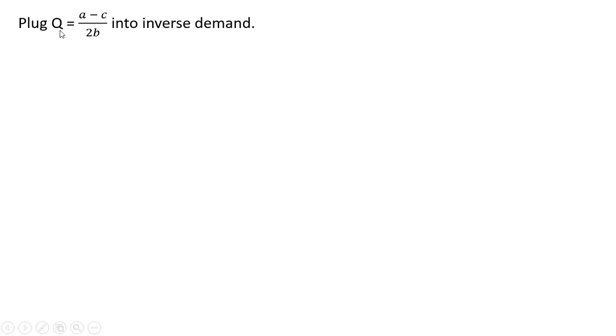To get the profit maximizing price, we're going to take that result from the last slide and plug it into the inverse demand. Here's our inverse demand where we have Q. We'll now plug in (a - c)/(2b) and solve for P. Notice that the b's cancel, leaving us with this step.